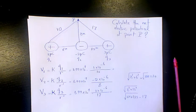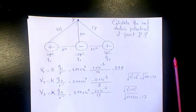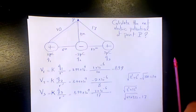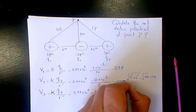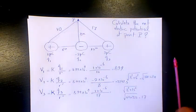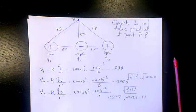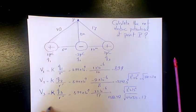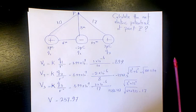So we need to find each of them now. 8.99 times 10 to the power of 9 times 10 to the power of negative 6 divided by 10 is 899. The second term gives approximately negative 2247.5, and the third term gives approximately 1586.47. So V total will be 899 minus 2247.5 plus 1586.47, which equals approximately 237.97 volts.